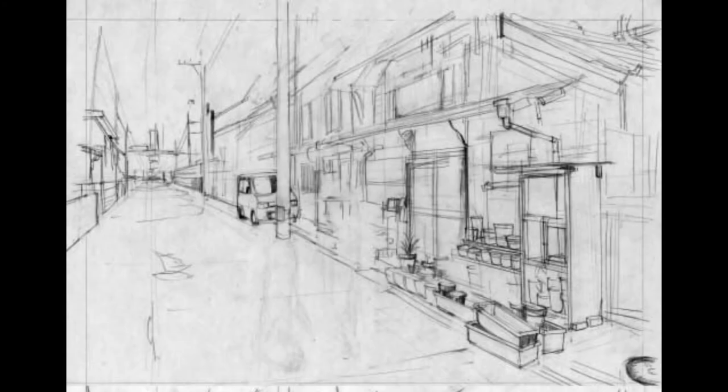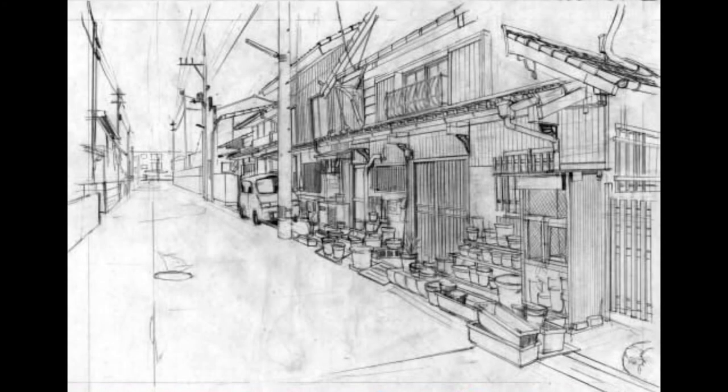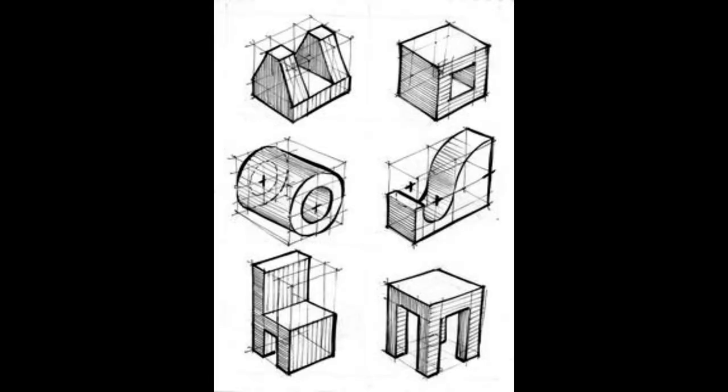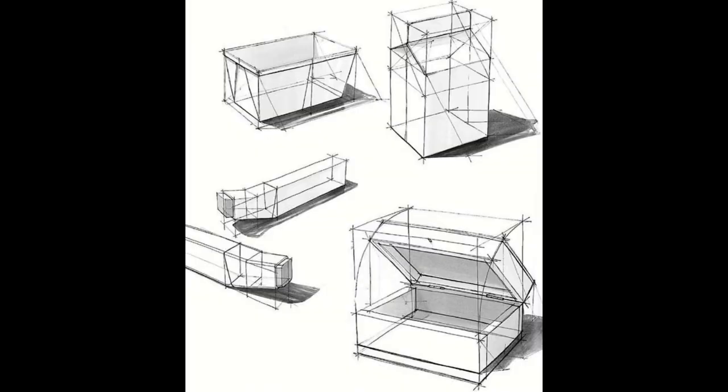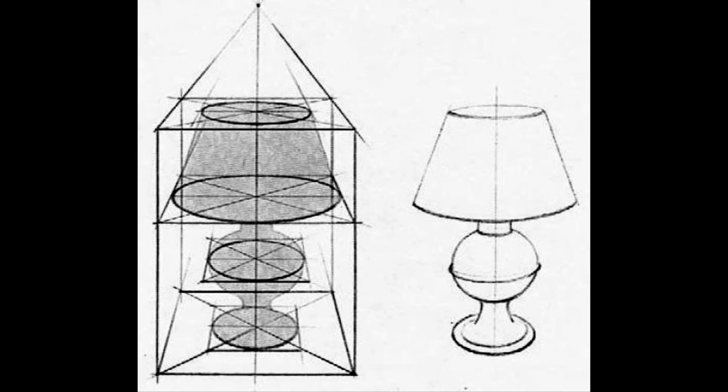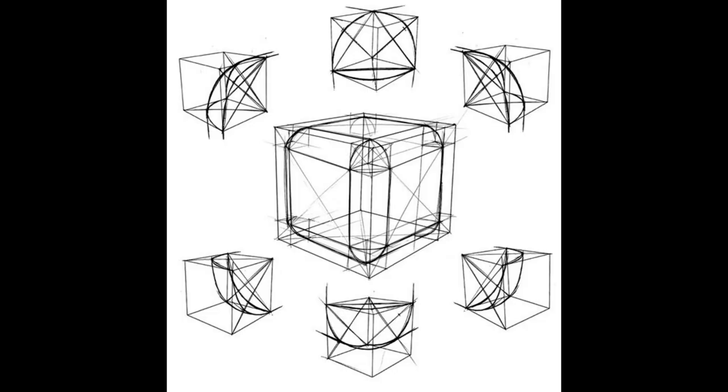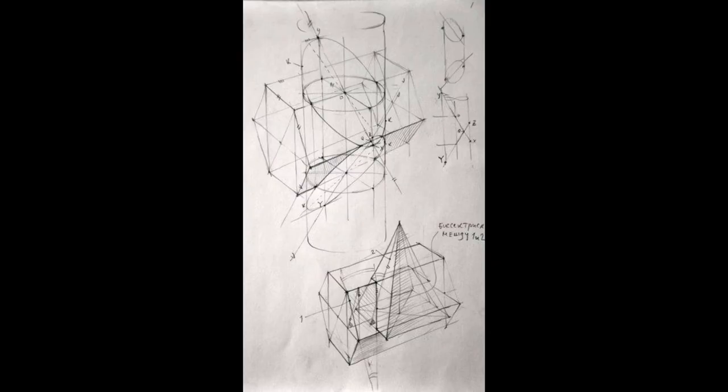Here are some other drawings done in two point perspective. In some you can see the trace lines. And I want to point out how often complex forms start out as a simple box. This is how we'll approach drawing complex forms as well. Creating a box and then chiseling away or adding to them.